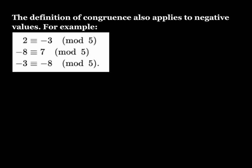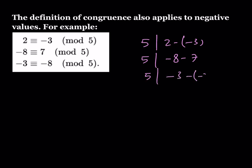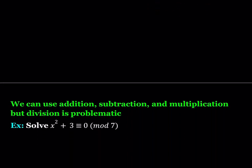The definition of congruence also applies to negative values. For example, 2 is congruent to negative 3 mod 5; negative 8 is congruent to 7; and negative 3 is congruent to negative 8. All these statements are true, and you can always check: 5 divides 2 minus negative 3, which is true; 5 divides negative 8 minus 7, which is again true; and 5 divides negative 3 minus negative 8. These are all true statements, and negative values are very helpful sometimes.